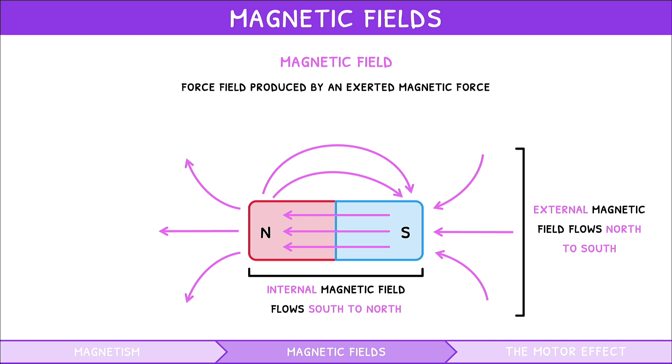Like other fields, the direction of the field lines represents the direction of the magnetic force, and the distance between the field lines represents the strength of the magnetic field. These are called flux lines and flux density respectively.